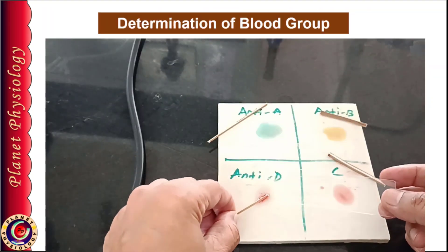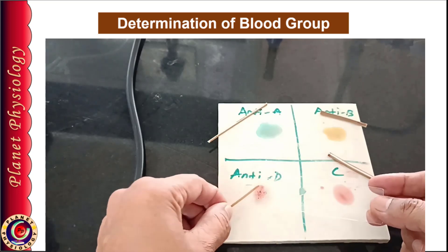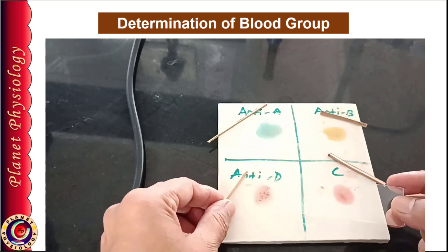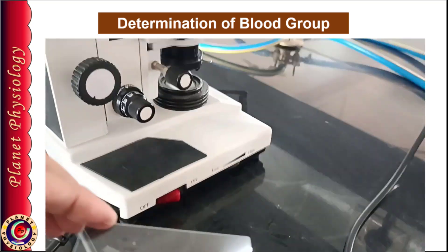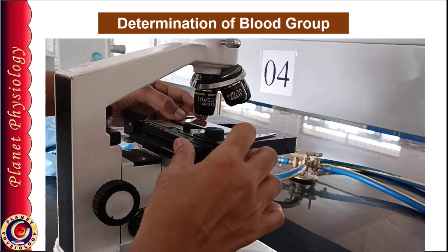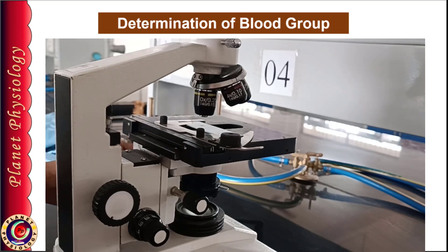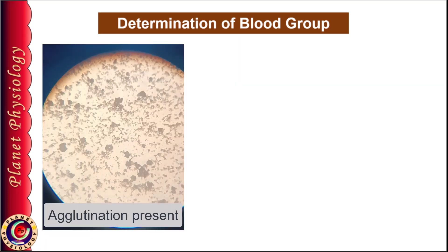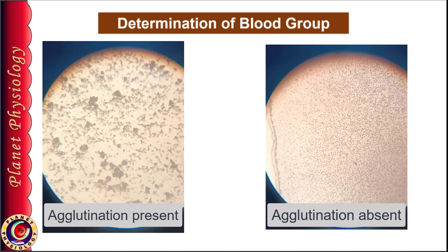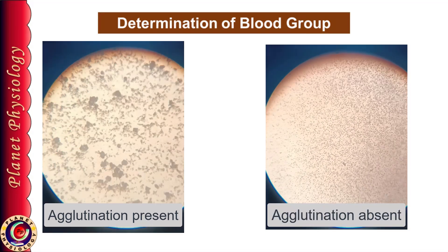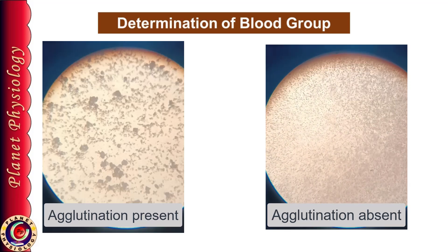If the reaction is weak, the clumps are very fine and may not be visible to the naked eye. Hence, it's always better to confirm the reaction under the microscope. For this, transfer a small amount of sample from the tile to the glass slide and observe under low power, i.e., 10x objective. If you are using the slide method, you can directly place the slides on the microscope and observe. Clumps of RBCs indicate presence of agglutination reaction. If RBCs appear as separate cells, reaction is absent, meaning the particular agglutinogen is absent.